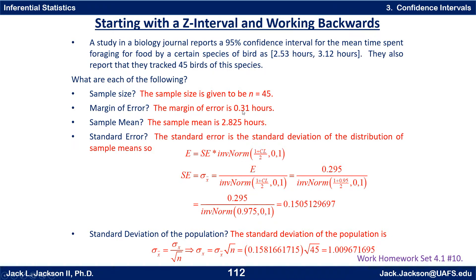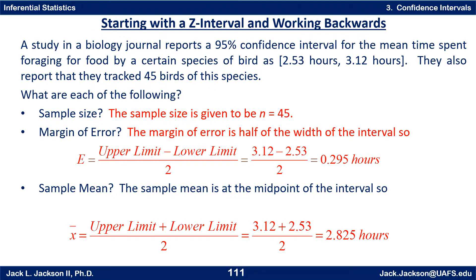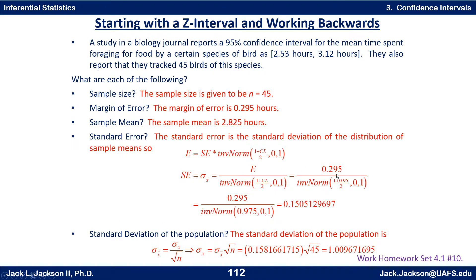We just figured out E — that was 0.295. The confidence level was 0.95, so we compute the inverse norm of (1 + 0.95) / 2, which is the inverse norm of 0.975. Working this out on a calculator gives a standard error of approximately 0.1505. This is sometimes called the standard error of the mean, or more precisely, the standard deviation of the distribution of sample means — sigma of the x-bar values.